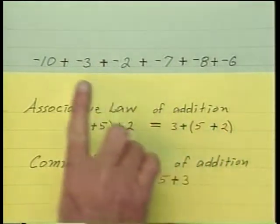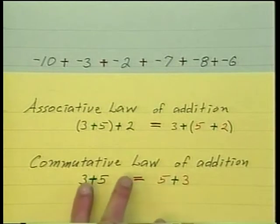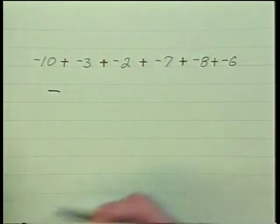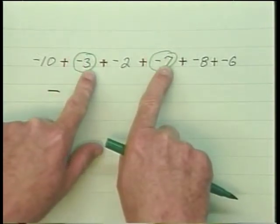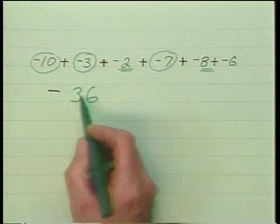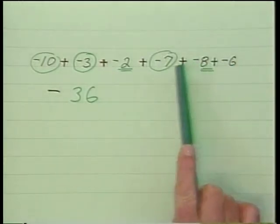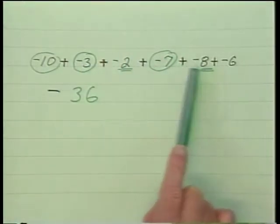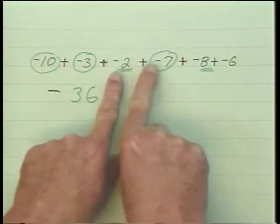Then you forget the signs and simply add the absolute values. There's a particular shortcut here if you remember your associative law of addition, which says if you're adding, you can add the front two first or the back two first, or add in any combination you wish. And the commutative law of addition says if you're adding, you may flip around and add in a different sequence. So knowing that, we notice combinations which give us 10, 20, and 36 absolute value-wise. So the answer is negative 36.